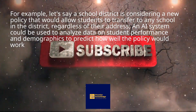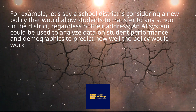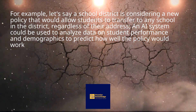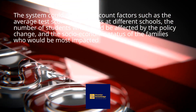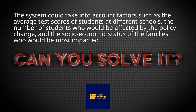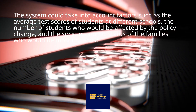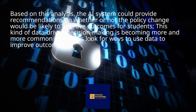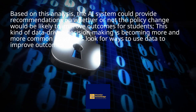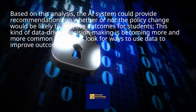For example, let's say a school district is considering a new policy that would allow students to transfer to any school in the district, regardless of their address. An AI system could be used to analyze data on student performance and demographics to predict how well the policy would work. The system could take into account factors such as the average test scores of students at different schools, the number of students who would be affected by the policy change, and the socioeconomic status of the families who would be most impacted. Based on this analysis, the AI system could provide recommendations on whether or not the policy change would be likely to improve outcomes for students. This kind of data-driven decision-making is becoming more and more common as schools look for ways to use data to improve outcomes.